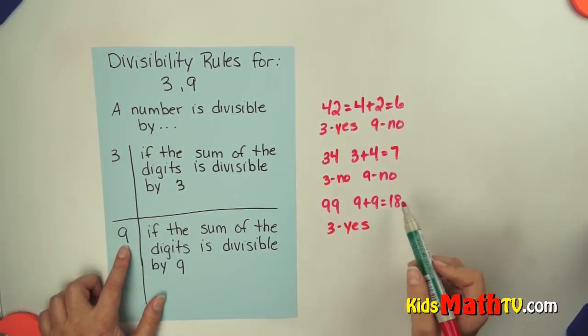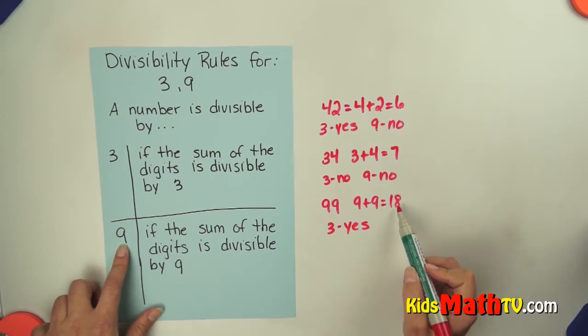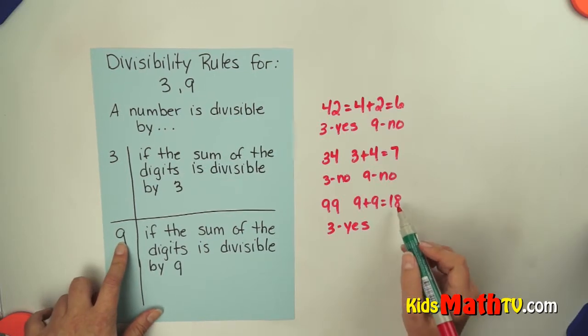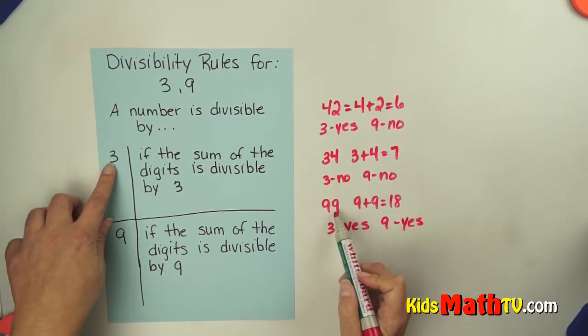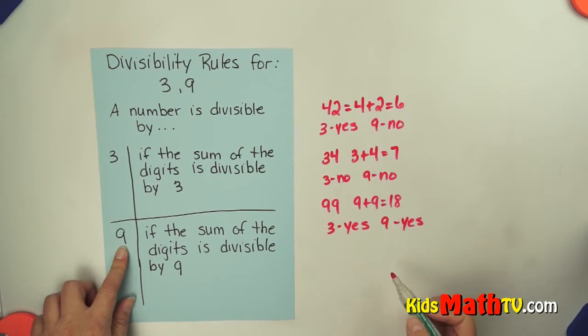Let's try the rule for 9. 18, does 18 divide by 9 evenly? Yeah it does. 18 divided by 9 is 2. So for 9, yes. The number 99 is actually divisible by both 3 and 9.